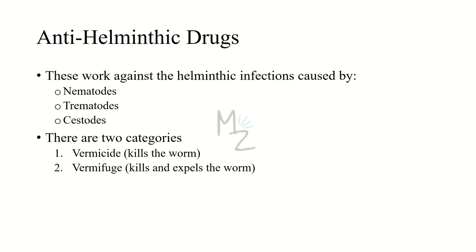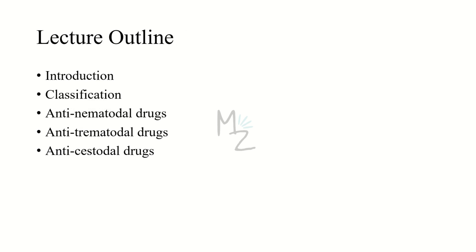Helminths are worms. I've got a detailed video series on helminthic infections and helminths — find their links in the description or in the top right corner. Antihelminthic drugs work against helminthic infections caused by nematodes, trematodes, and cestodes. There are two categories: wormicide, a drug responsible for killing the worm, and wormifuge, responsible for not only killing but also expelling the worm out of the body.